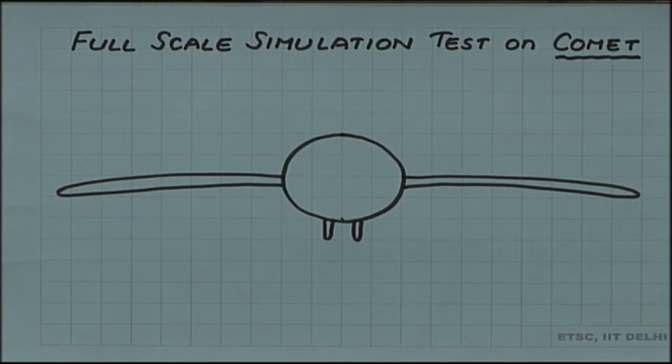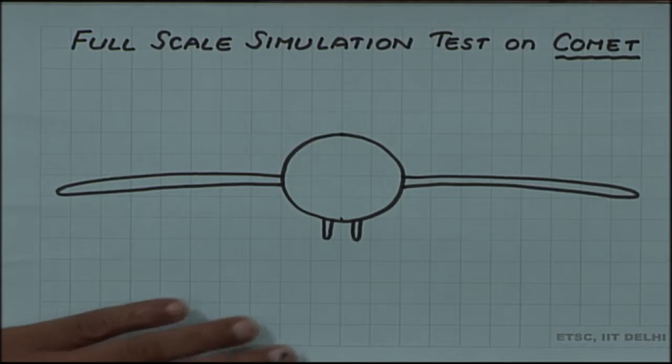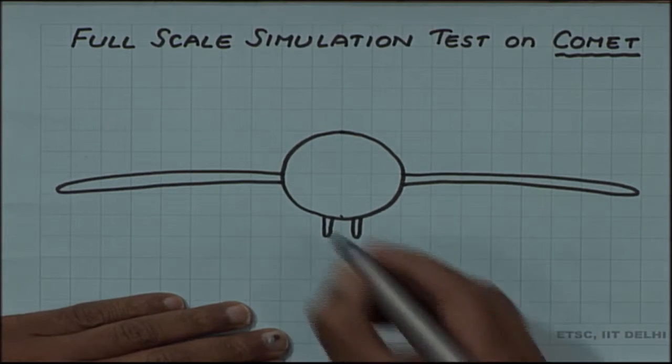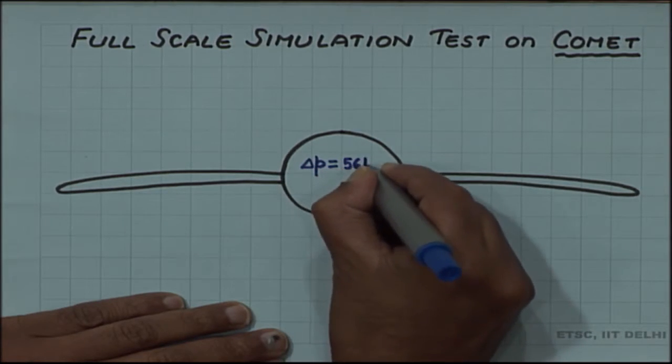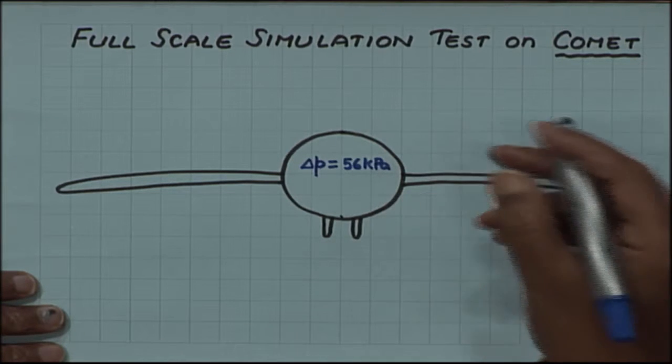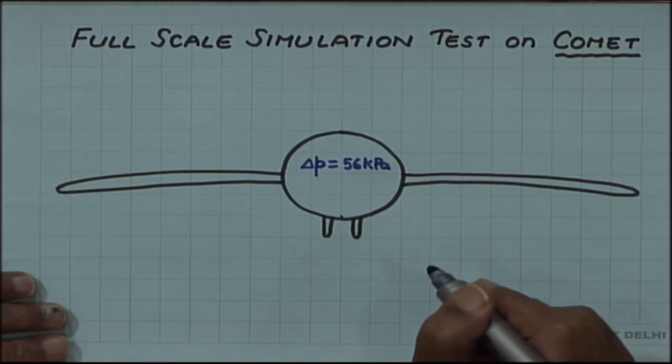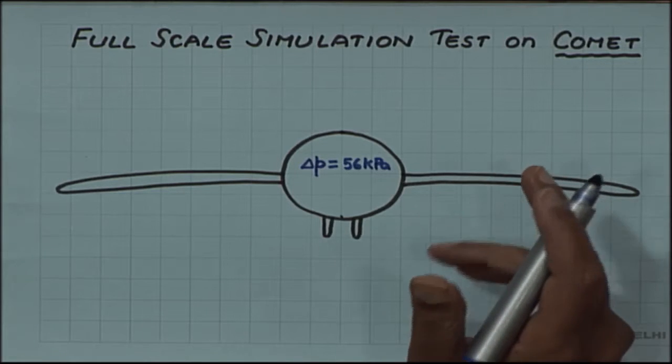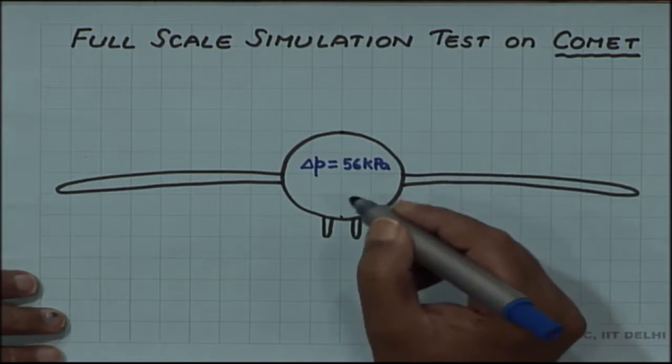This is a very historic simulation test in aviation history and in engineering history, because the whole aircraft was taken as a test specimen. The entire aircraft was supposed to be tested for fatigue. We have seen that a pressure difference of 56 kilopascals gets generated when the flight is at cruising altitude. To create this pressure difference, it was decided to pressurize the cabin of the aircraft. By sealing all the doors and windows, it was made leak-proof, and then it would be filled with a fluid to pressurize it.